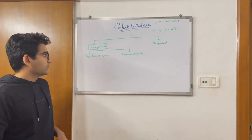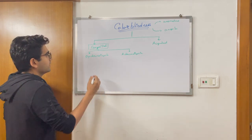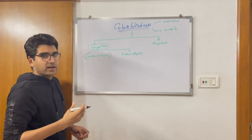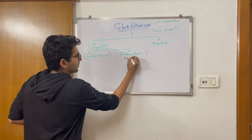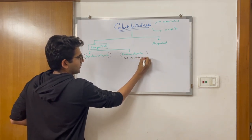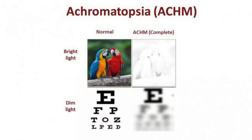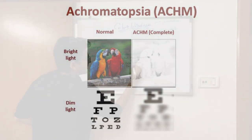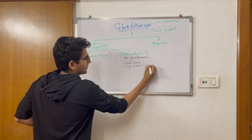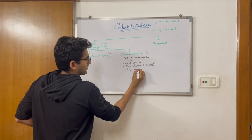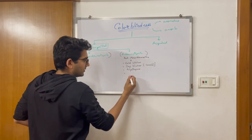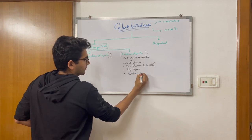Let us talk about the differences between dischromatopsia and achromatopsia. Dischromatopsia, as the word suggests, means some form of color vision is retained. Whereas achromatopsia is the complete absence of color vision — hence we also call it rod monochromatism. In this condition, there will be complete color vision loss. The patient will also suffer from day blindness, essentially due to cone dysfunction, and may suffer from nystagmus as well. On ophthalmoscopic examination, the fundus is normal.